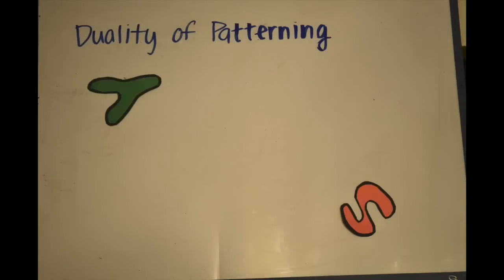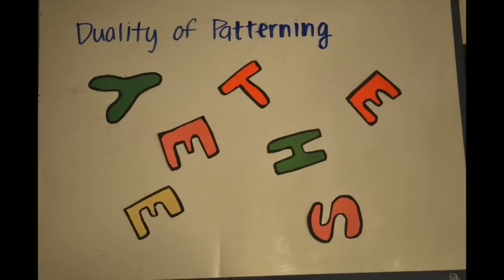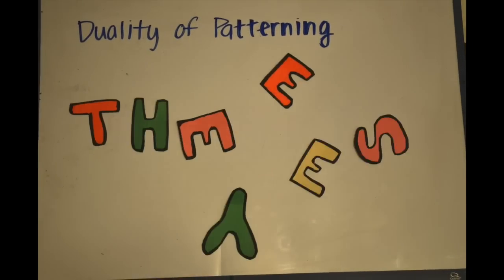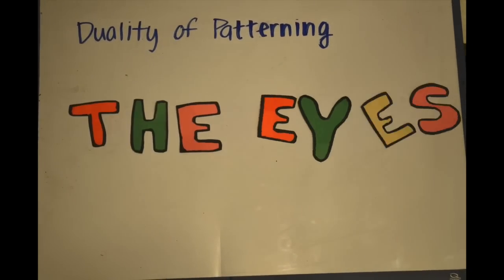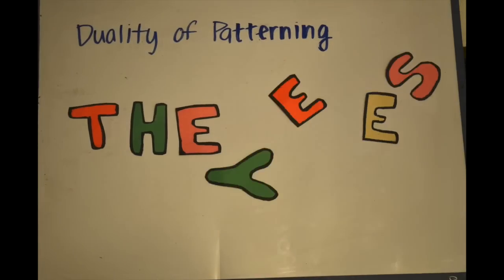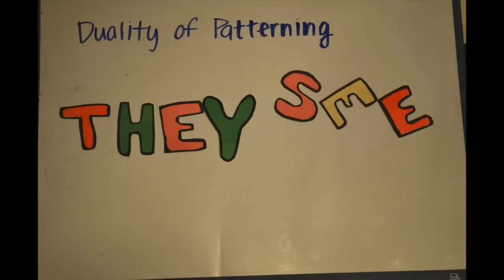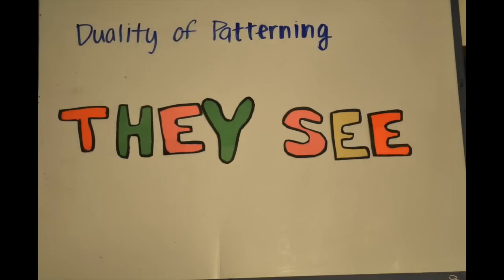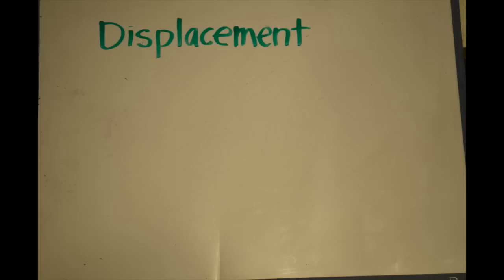So first, let's talk about duality of patterning. This is the ability to make meaningful units called morphemes out of meaningless parts called phonemes.